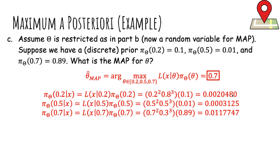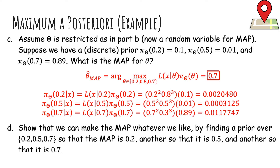We can also engineer the MAP to be whatever we want. If we put probability 1 on, say, 0.2 and zero on the others, then likelihood times prior collapses to just the value at 0.2. So by putting probability 1 (or 0.999) on any candidate and nearly 0 on everything else, we can force the MAP to be any value we choose — illustrating that the choice of prior is somewhat arbitrary.